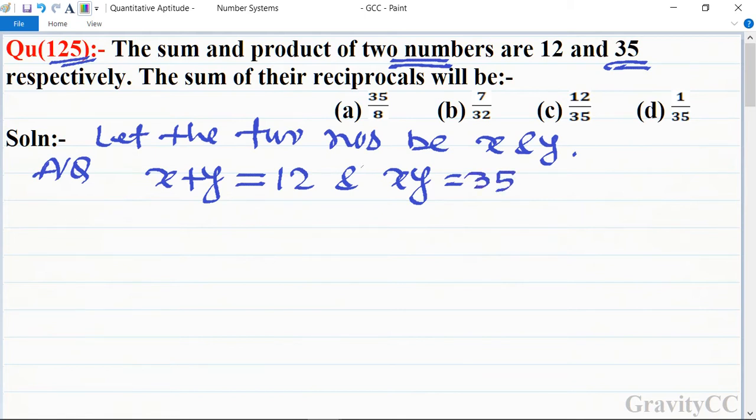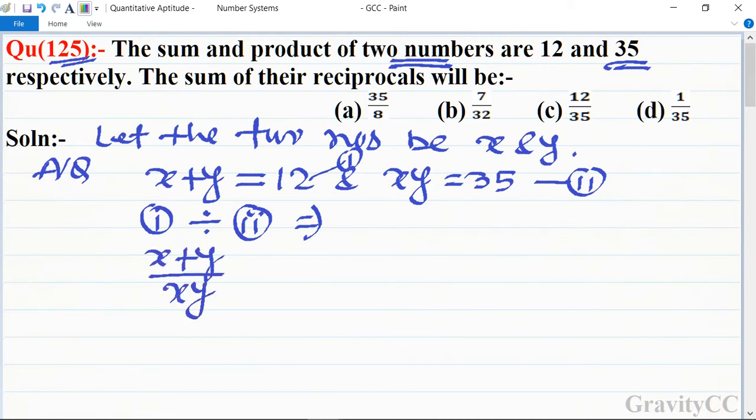Suppose this equation is the first one and this one is the second. Now divide first equation by second. We get (x+y)/xy = 12/35 for the sum of their reciprocals.